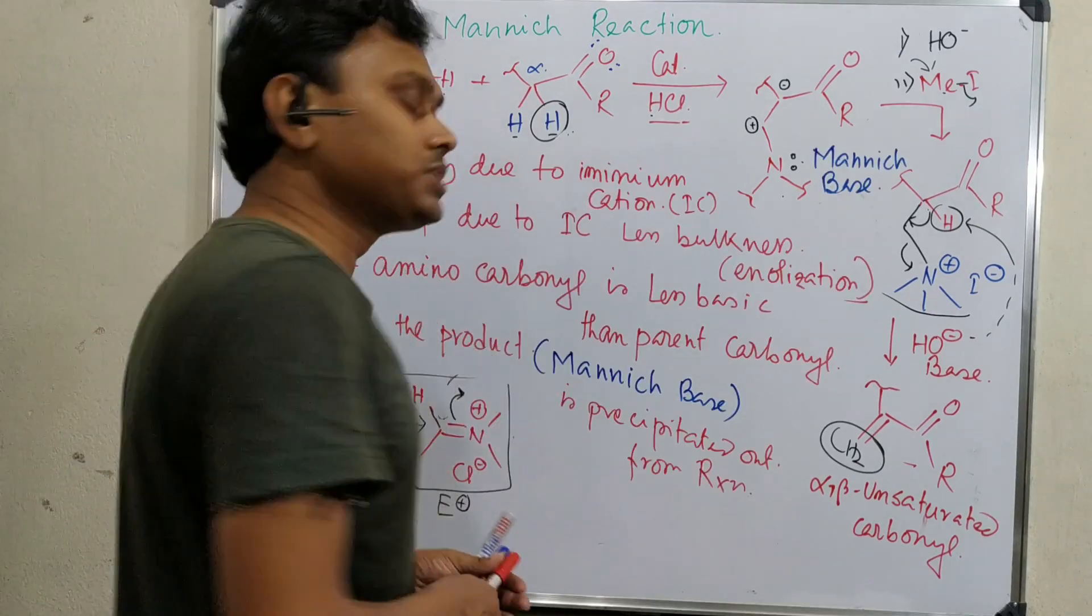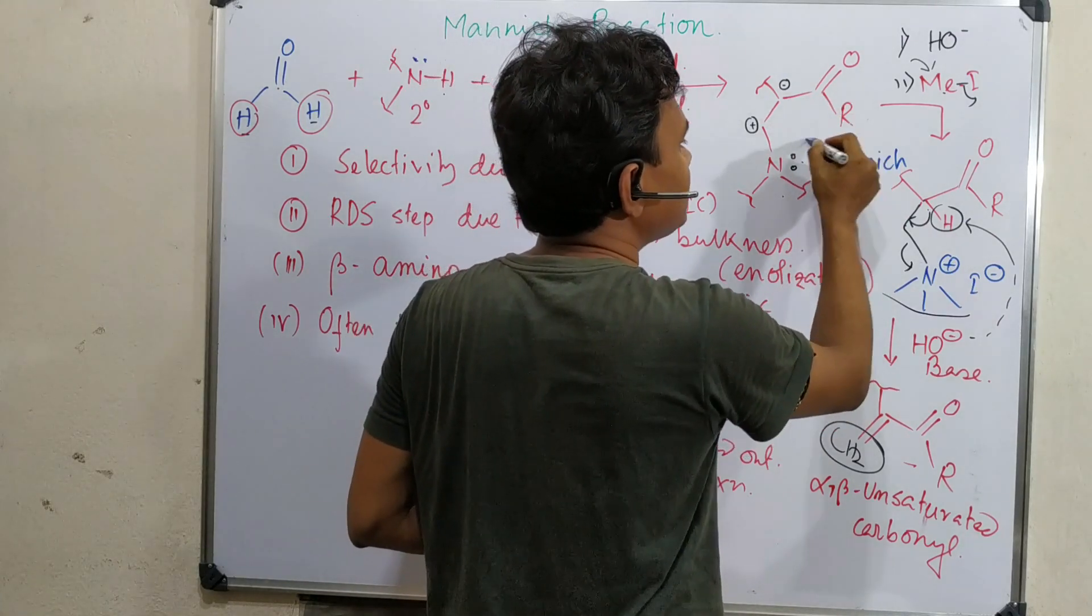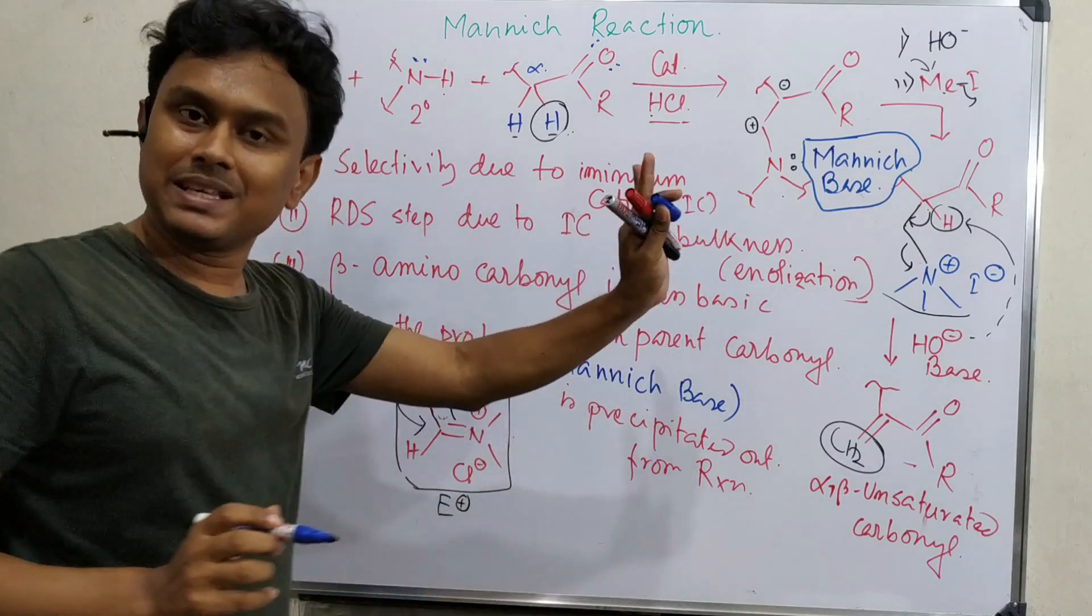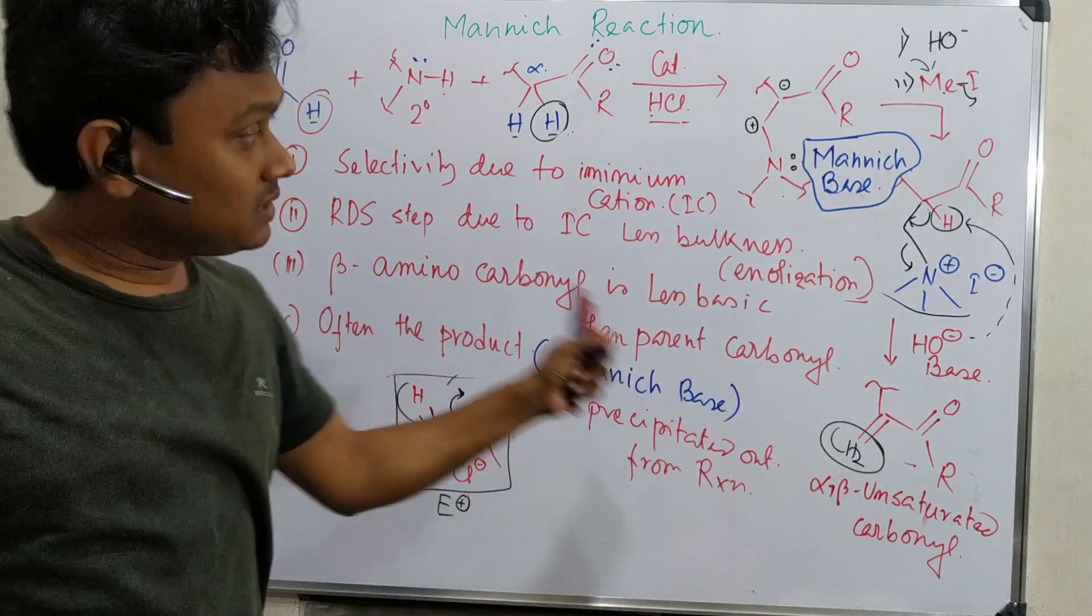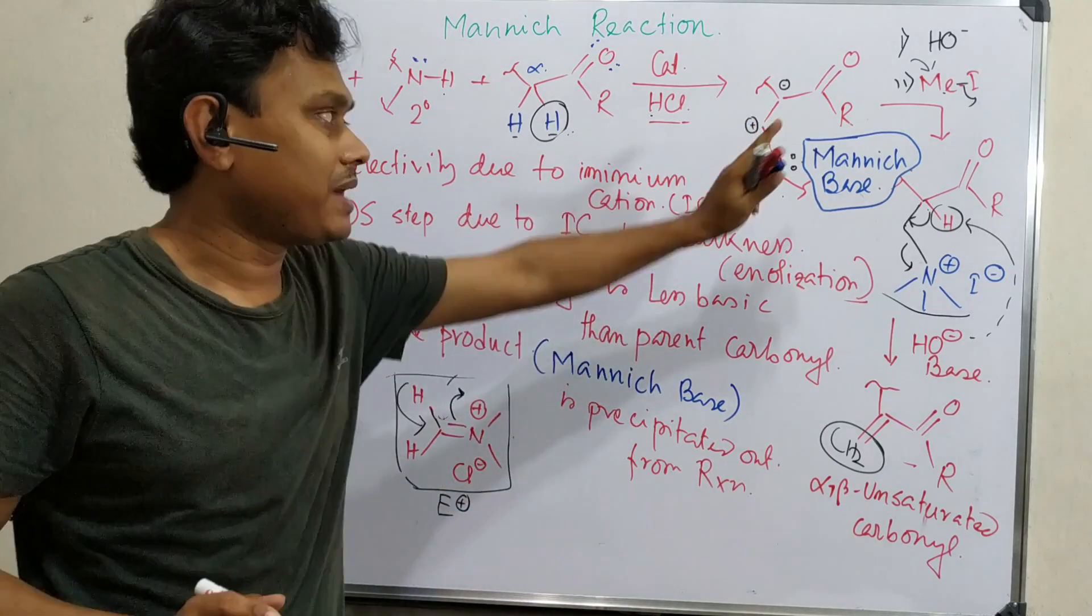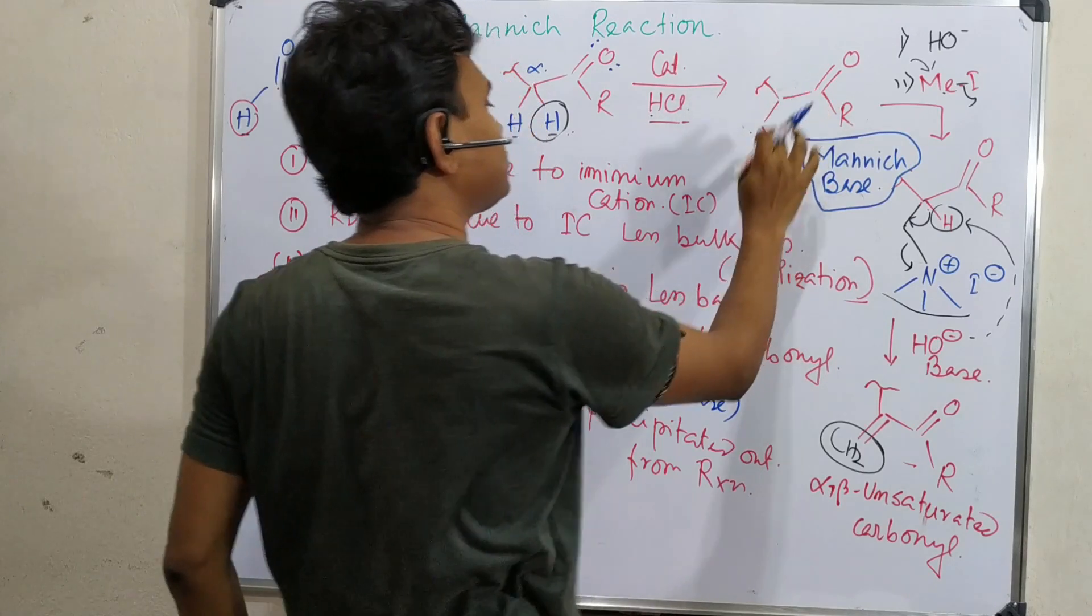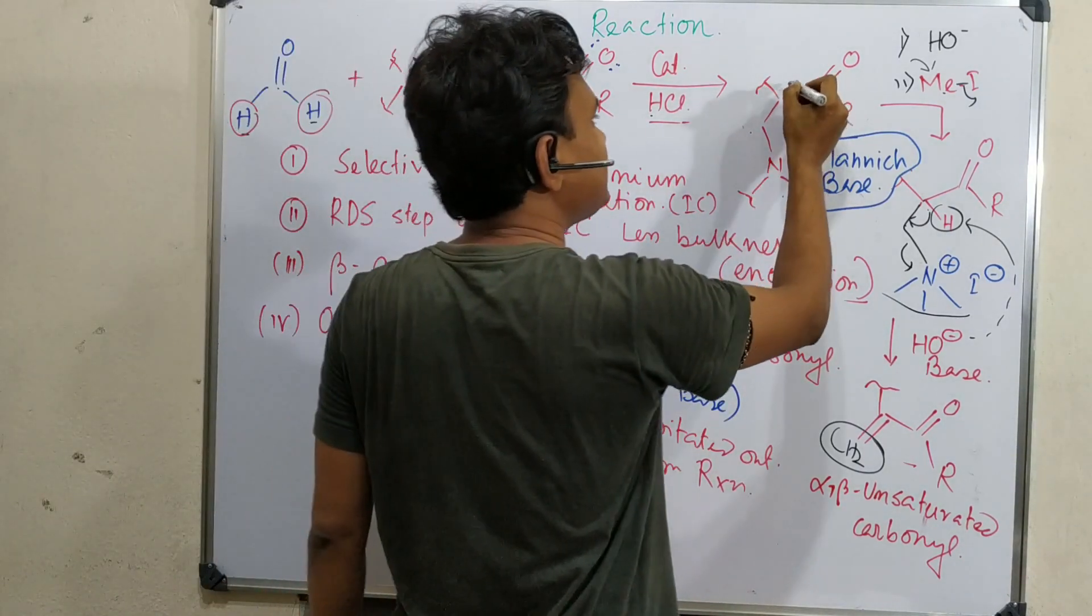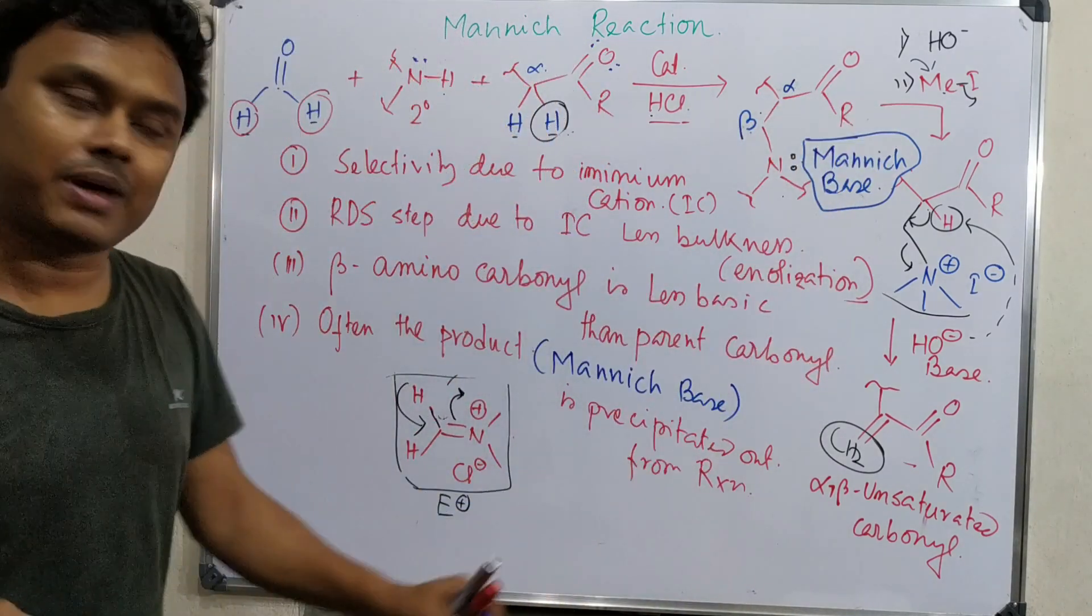I forgot one thing to tell you about the name of this reagent. This reagent is actually named Mannich base. Please keep it in mind. It may be asked in exam. This is the Mannich base. Mannich base if we say it is alpha beta, beta amino carbonyl. This is the Mannich base.